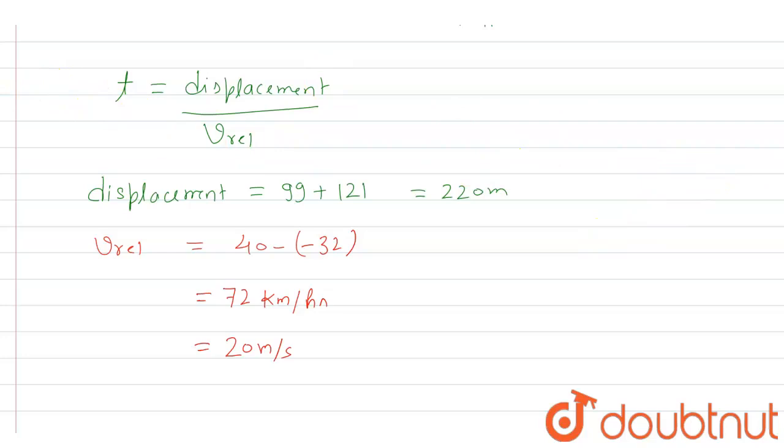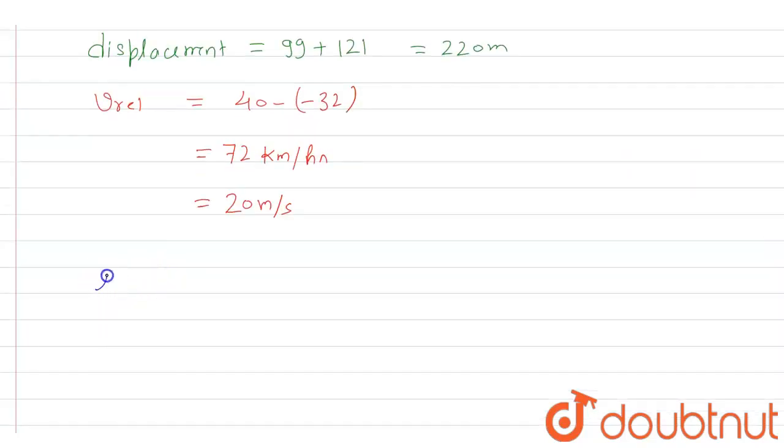When you put this value in the first equation for time, we get time equals 220 by 20. When we divide this, we get the value of time.